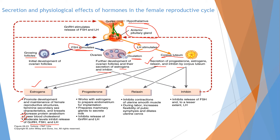Progesterone works with estrogen to prepare the endometrium for implantation, prepares the mammary gland to secrete milk, and inhibits the release of gonadotropin releasing hormone and luteinizing hormone.